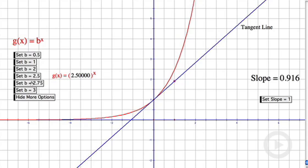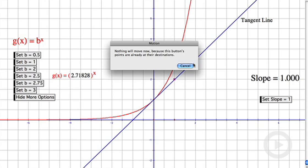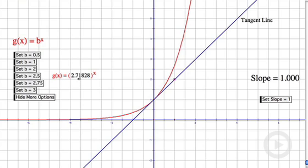Is it 2.5? No. 2.75? No. It turns out that if I want to get the slope to be exactly 1, I need b to be 2.71828. It's this number e. It's the only base that will make it so that the tangent line has a slope of exactly 1 at (0,1).